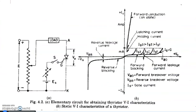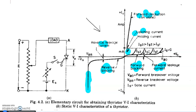All the discussions we have made are put together in the complete static IV characteristics of a thyristor. You can see the holding current, the latching current, the forward blocking mode with forward leakage current, the forward conduction region, the reverse blocking region with reverse leakage current, and the reverse avalanche breakdown region. VBO is always greater than VBR — the forward breakover voltage is always greater than the reverse breakover voltage — because of the difference in doping levels in the inner regions. Always draw the static IV characteristics by understanding each concept and the procedure to follow.